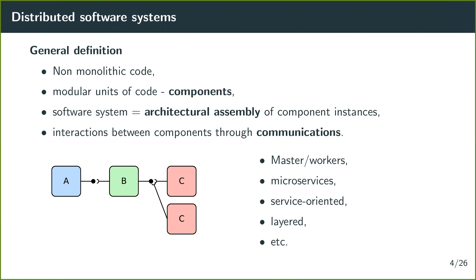We are interested in distributed software systems. A broad definition: it is a non-monolithic code made of different modules or components. To build a distributed software system, you make an assembly of component instances that interact through communications. For example, a component of type A provides a service or data to an instance of component B, which itself provides a service to two instances of component C. Examples include master-worker architectures, microservices, service-oriented systems, etc. This work is intended to be generic to any distributed software system, but we evaluated it on service-oriented architectures.